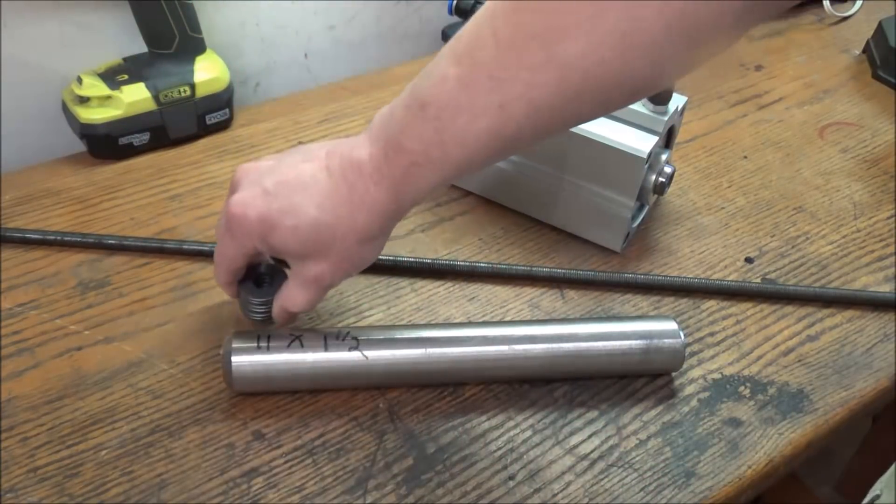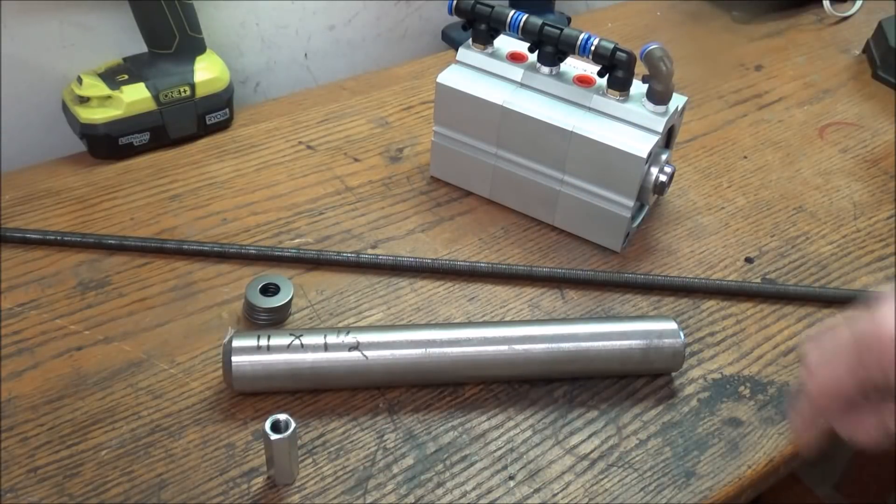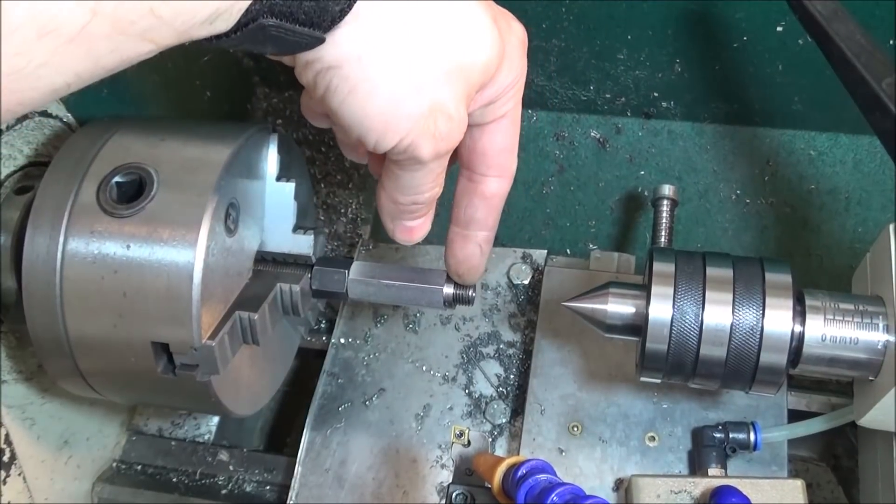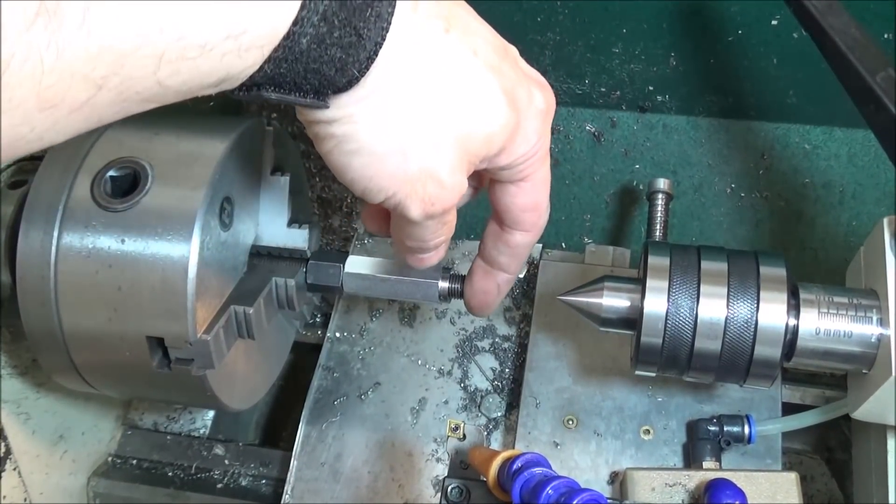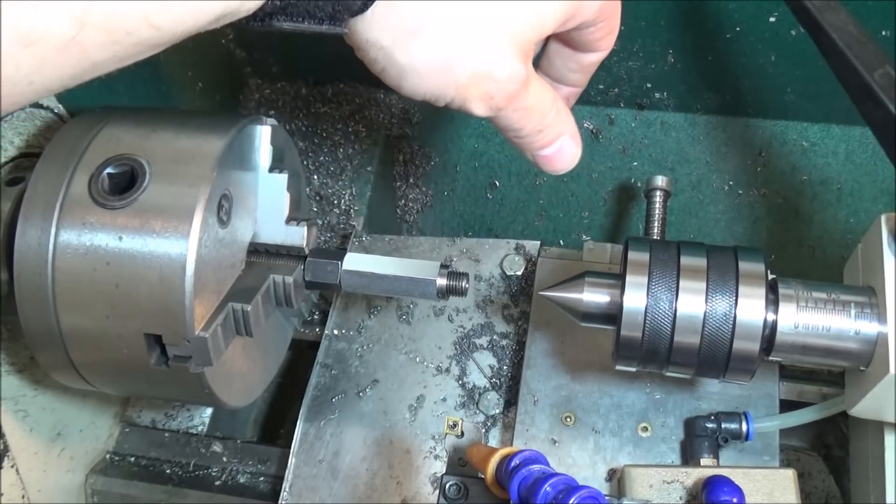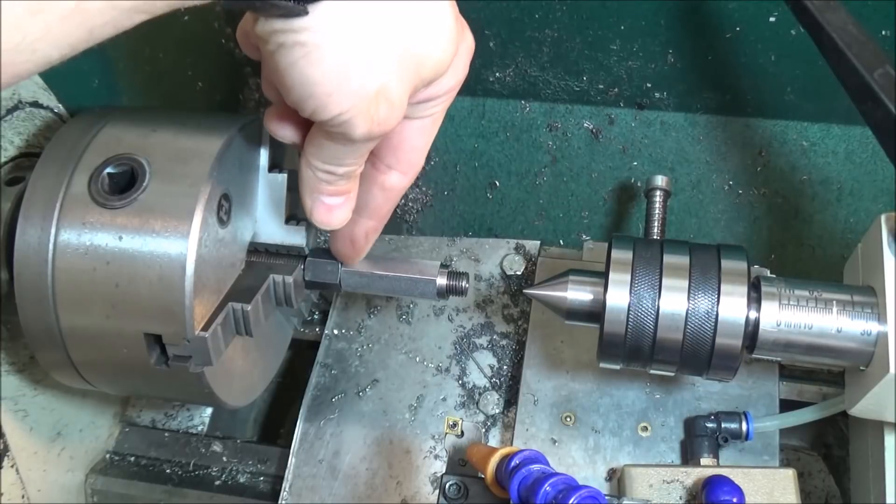All right, so I've center drilled the threaded rod, and now I'm going to connect the tailstock here, and that should keep it from flexing.